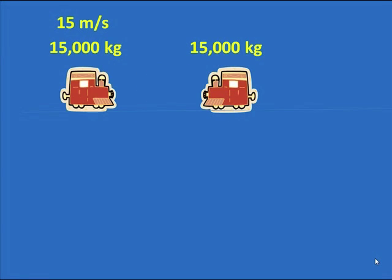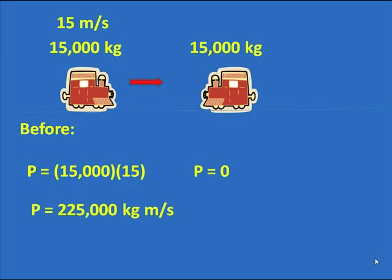It is at rest. The momentum then, before, is equal to the momentum of the first car, which we find is 15,000 times the 15. And the momentum of the second car is zero. We will add those two momentums together because it is a linear collision. And the overall momentum is to the right. And we can calculate it and find 225,000 kilogram meters per second.